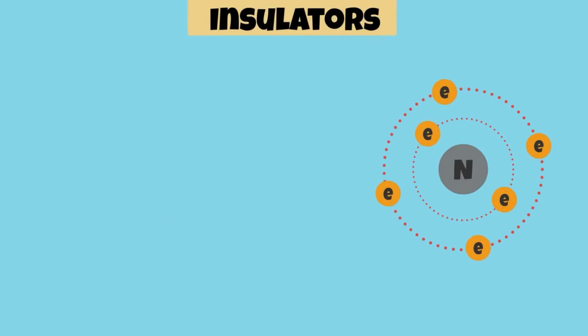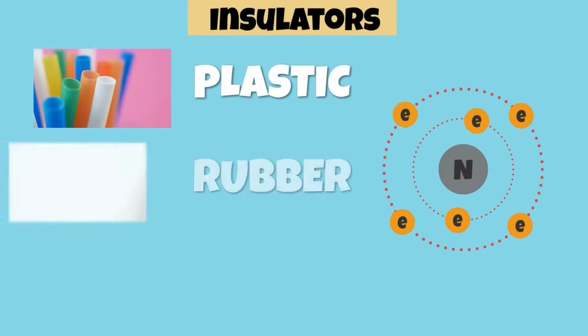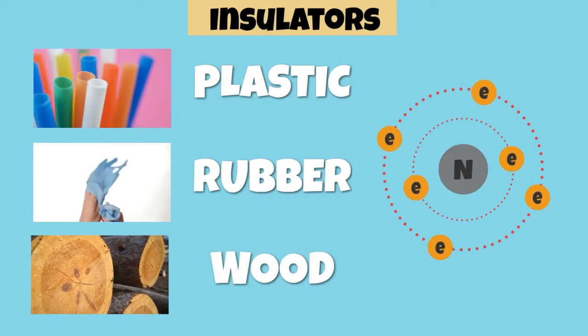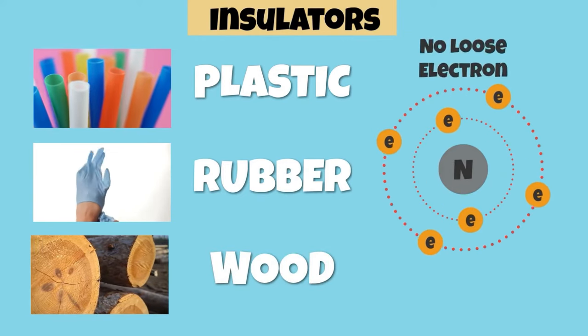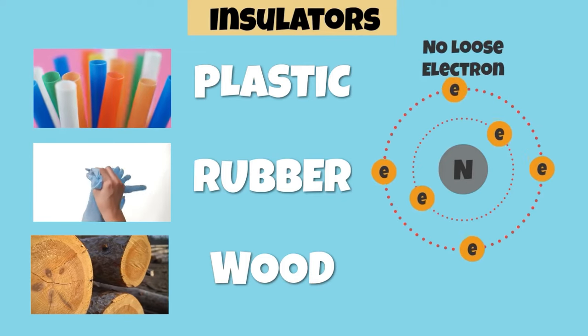Insulators such as plastic, rubber, wood, and glass resist the flow of electrical energy since they contain tightly bound electrons.